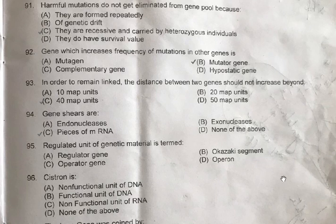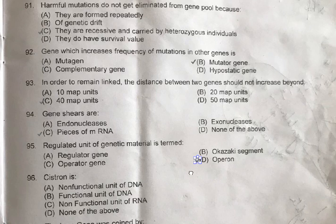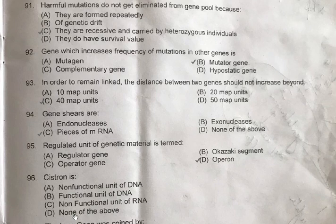Question 95: Regulated unit of genetic material is termed — A: Regulated gene, B: Okazaki segment, C: Operator gene, D: Operon. The correct option is D, Operon. Question 96: Cistron is — A: Non-functional unit of DNA, B: Functional unit of DNA, C: Non-functional unit of RNA, D: None of the above. The correct one is B, functional unit of DNA. These code for a protein.